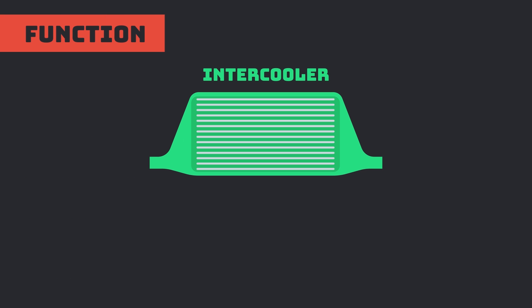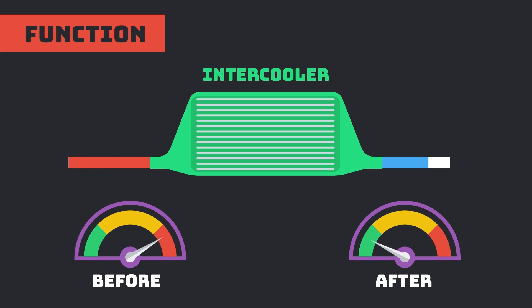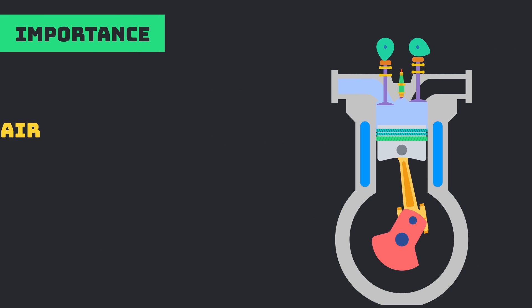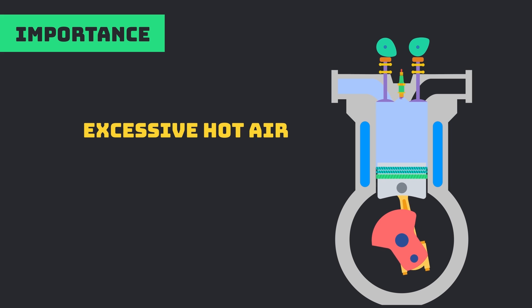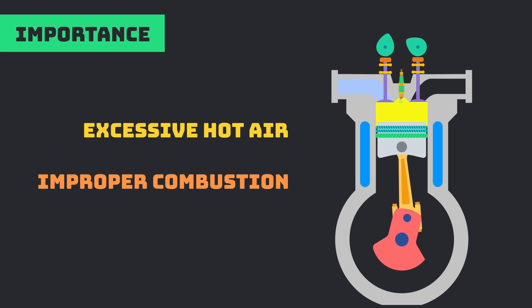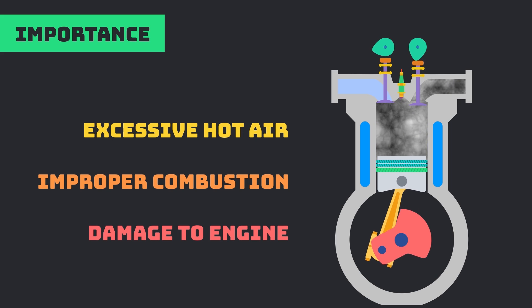The main function of intercooler is to remove the excessive heat from the intake air. It works on the principle of heat exchange and provides cooling to the intake air coming from the turbocharger. If the engine is subjected to hot air intake, there are maximum possibilities this causes misfire and engine stalling, which results in decreasing performance and damage to the components.